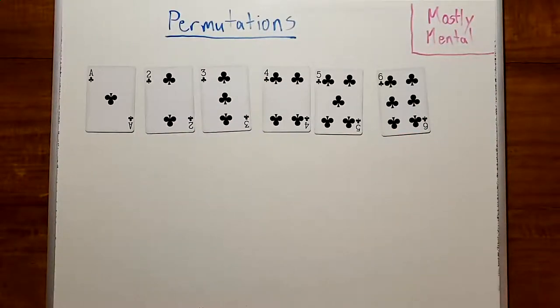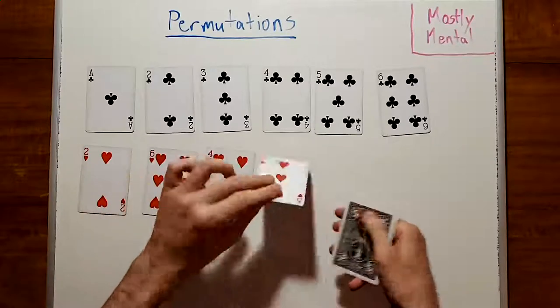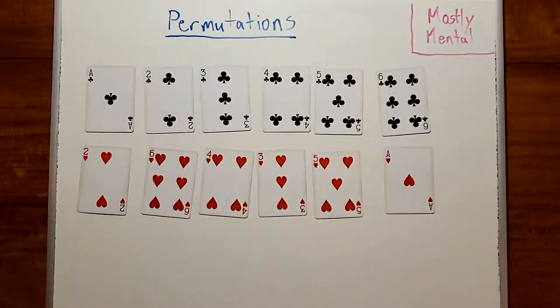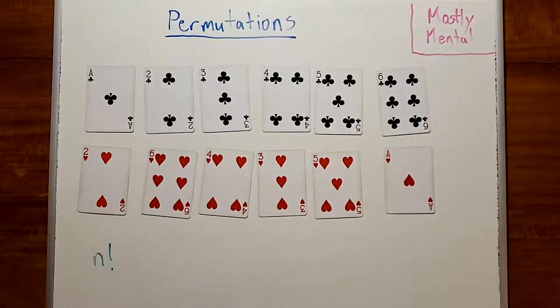For example, if we have the numbers 1 through 6 here, we might shuffle them to get 2, 6, 4, 3, 5, 1. And, as we saw last time, there are n factorial such permutations.